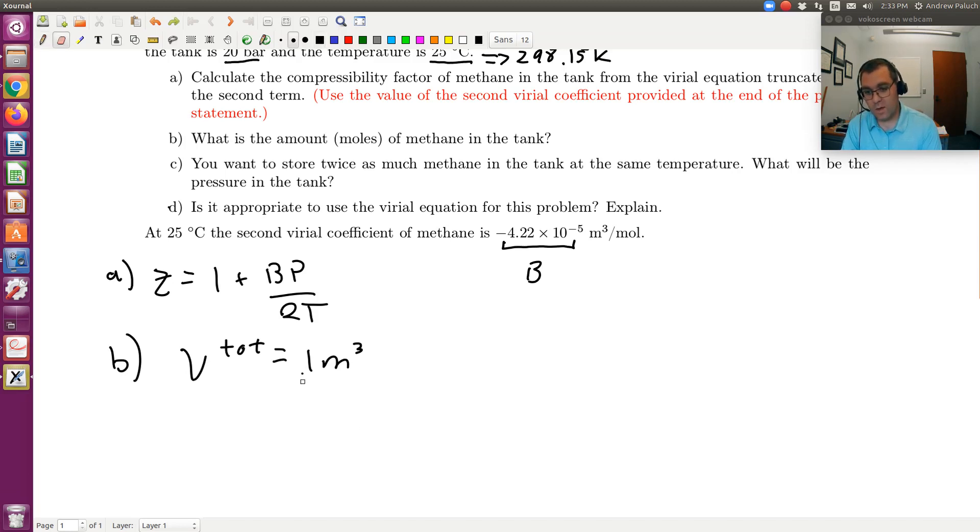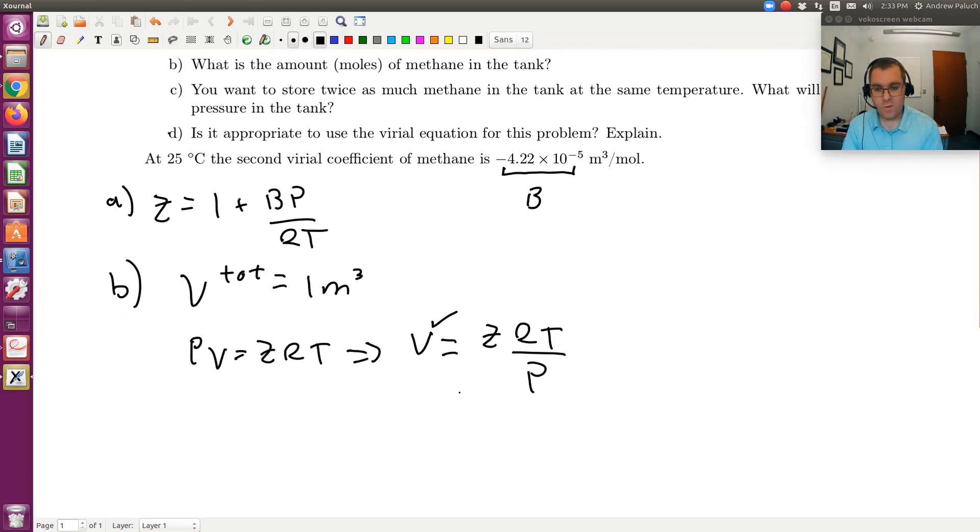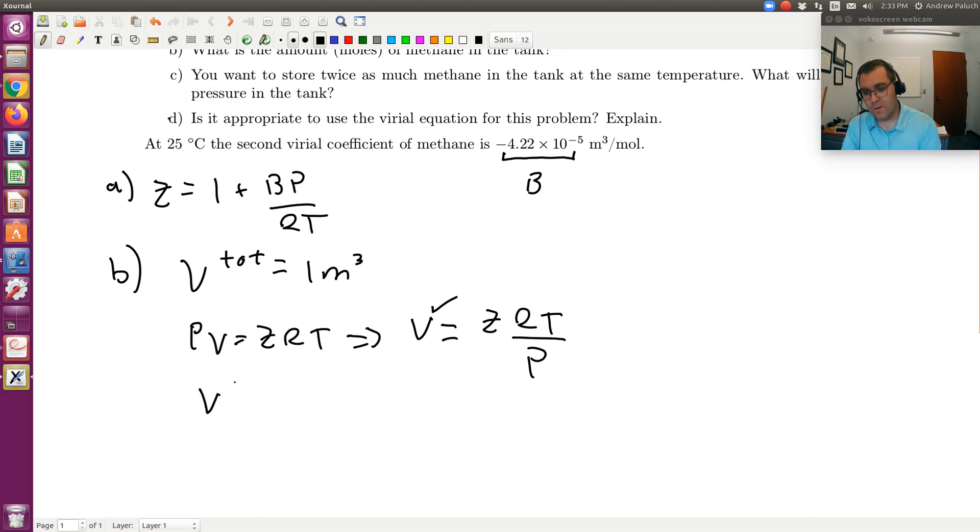So equation of state for real fluids is PV equals ZRT, where V there is my molar volume. So solving for V, I get the V is equal to ZRT over P, where I just solved for Z, and I have RT and P. So that's good, so I can solve for V, my molar volume. Again, just keep track of your units. And then the general idea would be that V total is equal to N times V, moles times molar volume, so if I want N, N is equal to V total over V.